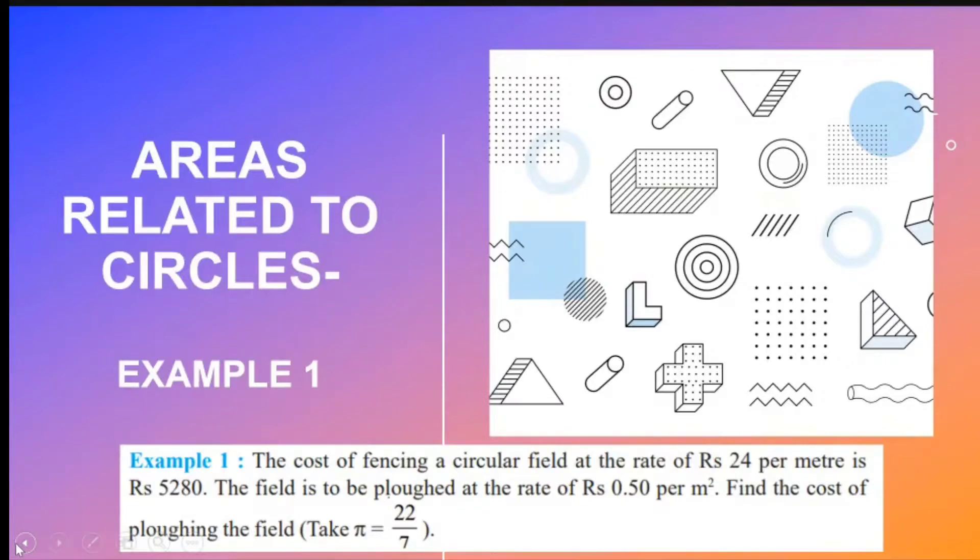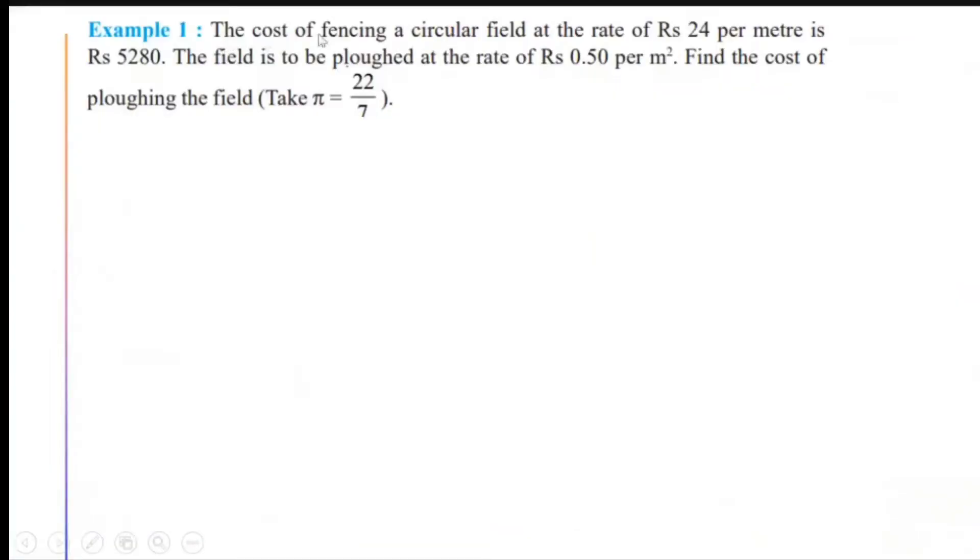The first one in this series is example 1. It states that the cost of fencing a circular field at the rate of Rs 24 per meter is Rs 5,280. The field is to be plowed at the rate of Rs 0.50 per meter square. Find the cost of plowing the field. Take π equal to 22 upon 7.